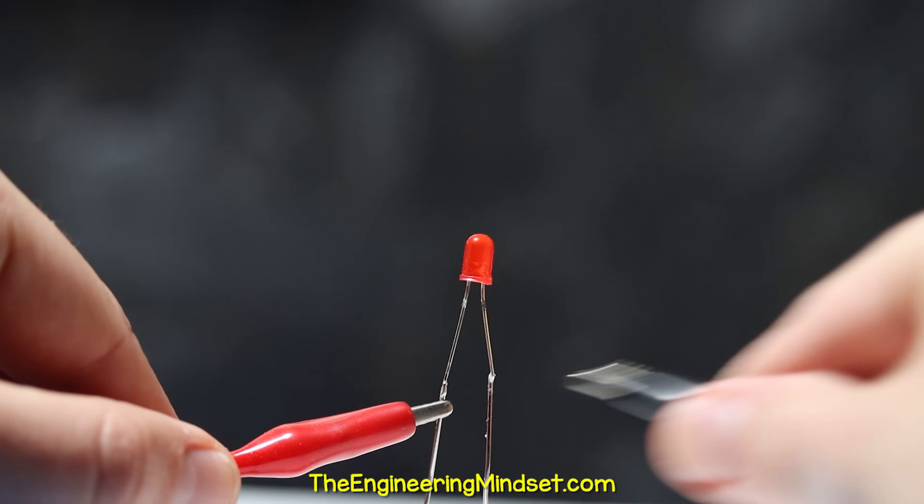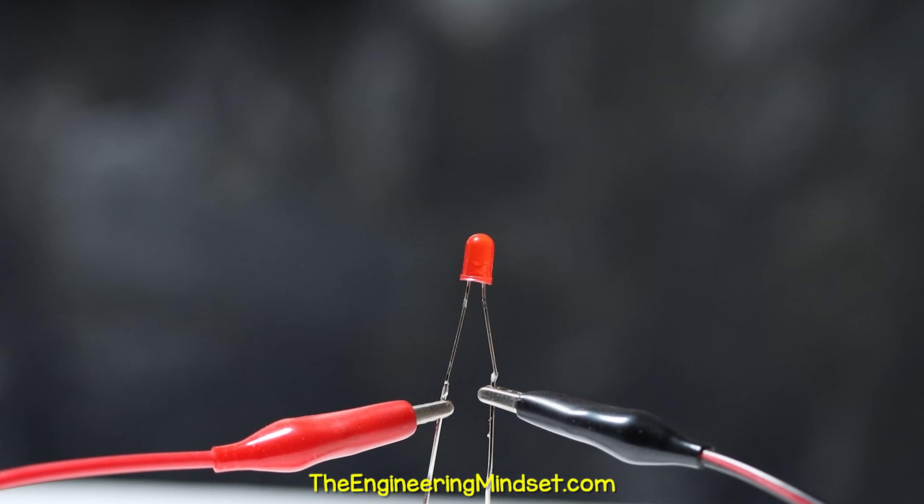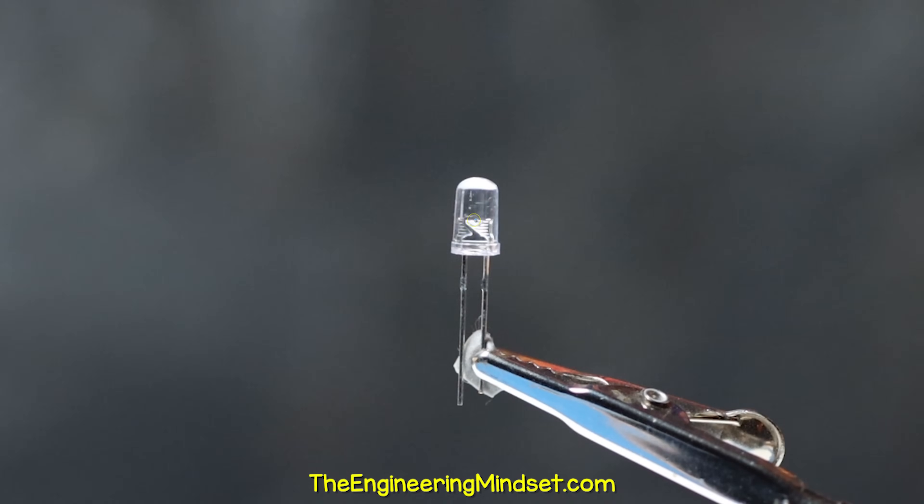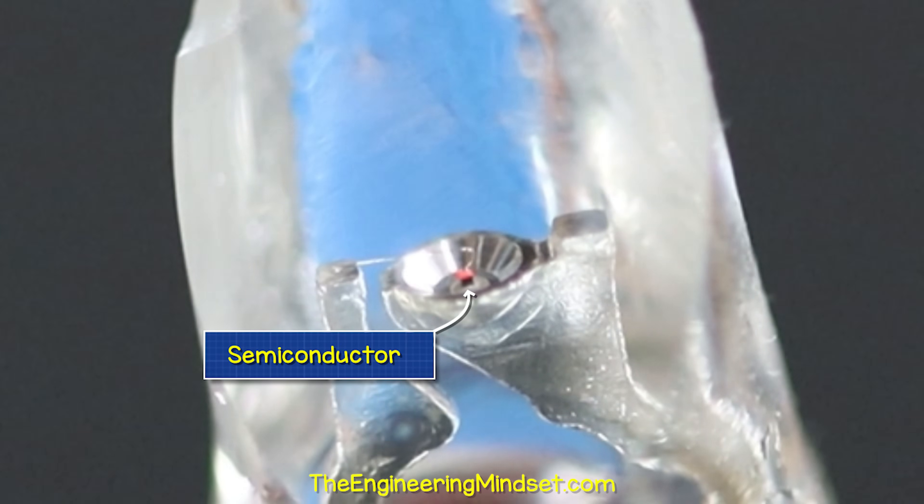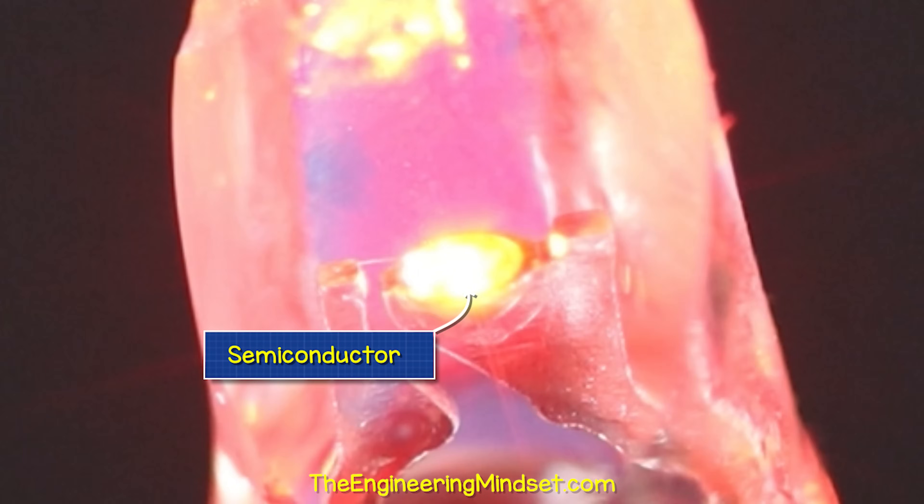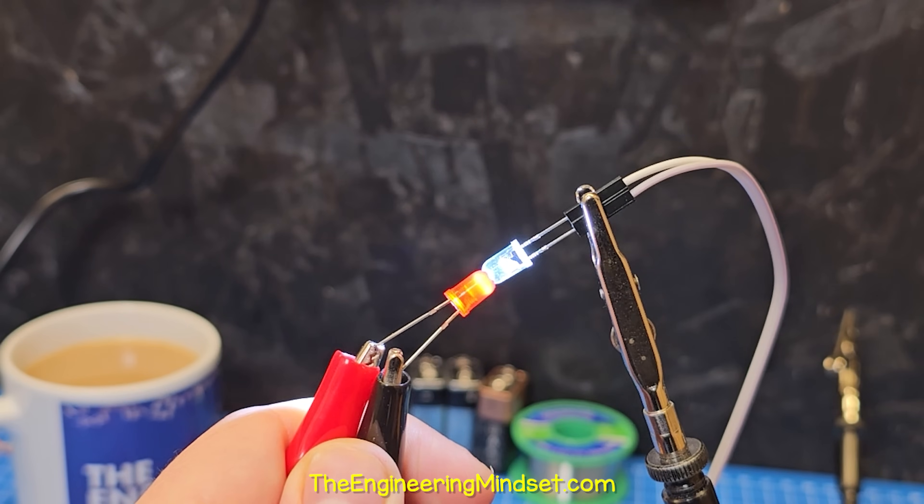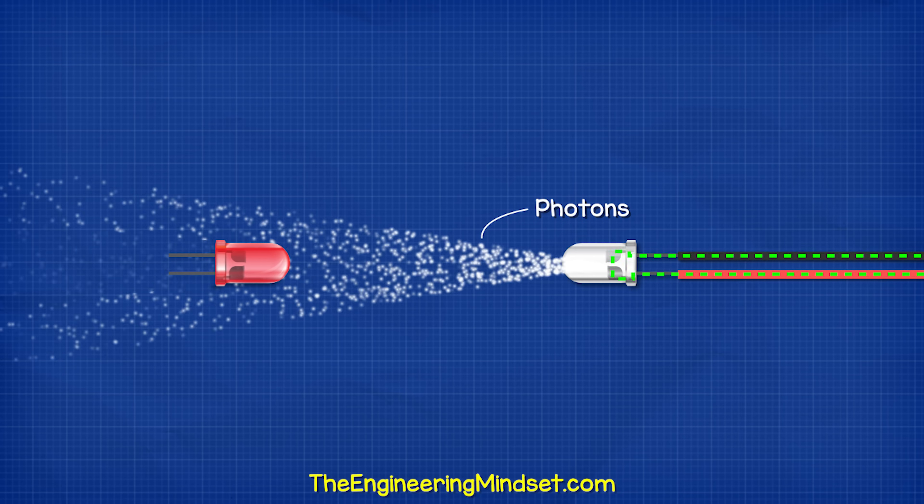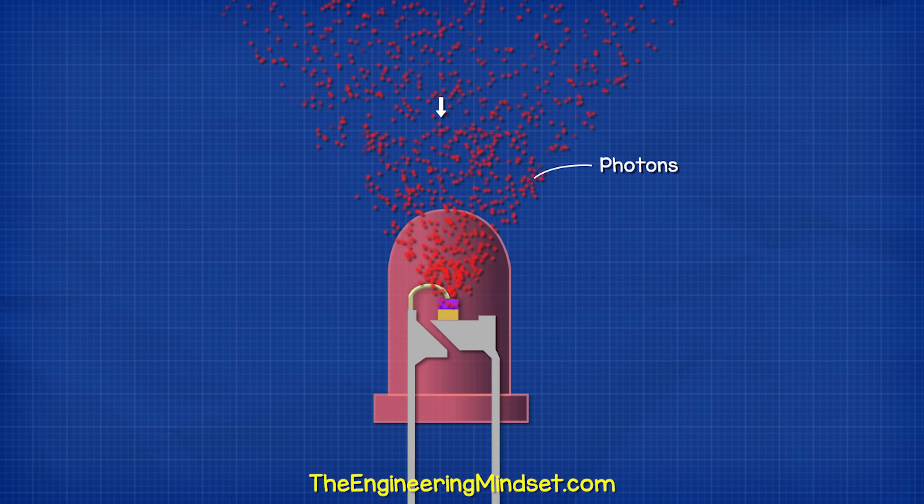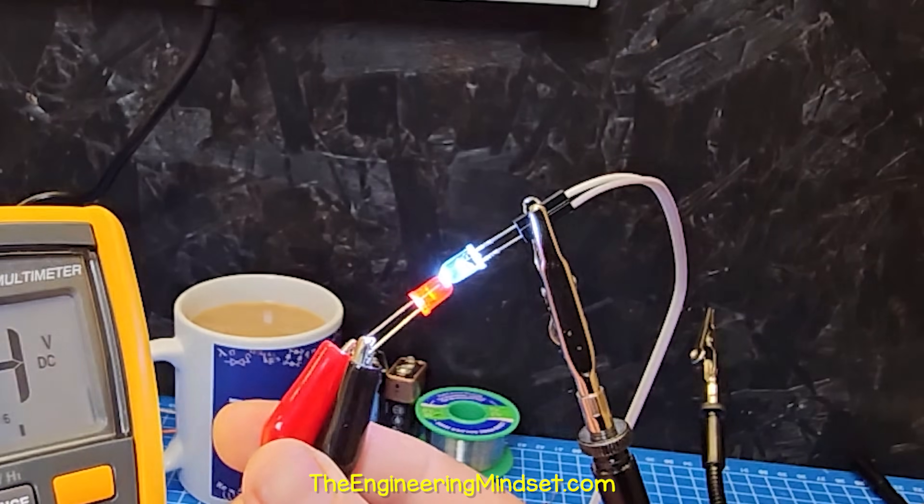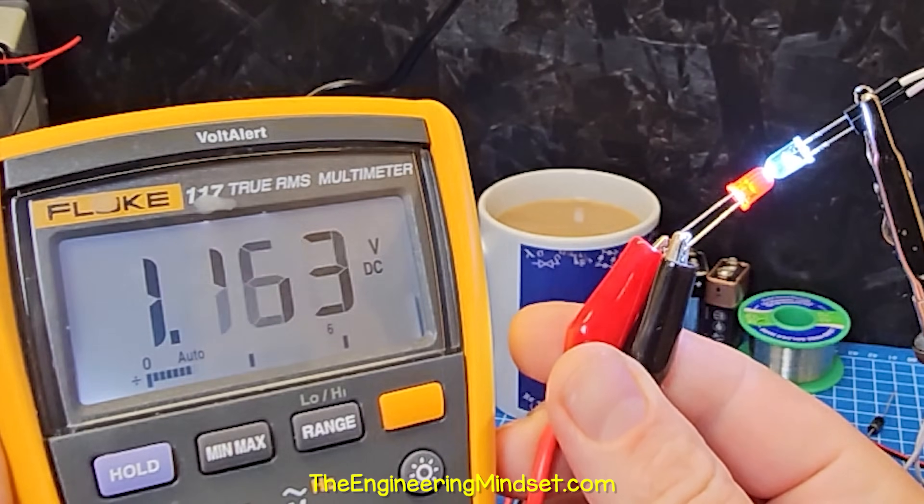When we apply a voltage across an LED, it produces light. It all comes from a tiny piece of semiconductor material inside, which is emitting energy as photons. But if we shine a light onto the LED, then we are firing photons back into it. So the process reverses and it will also produce a small voltage.